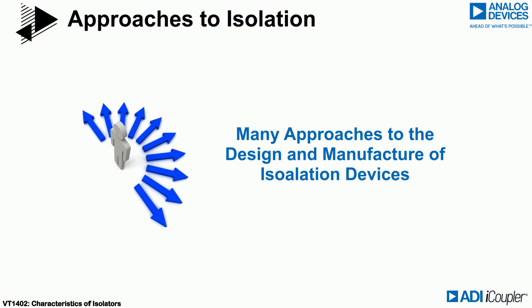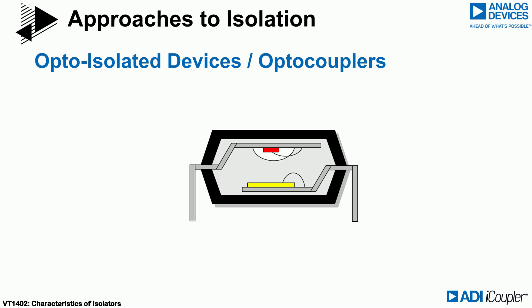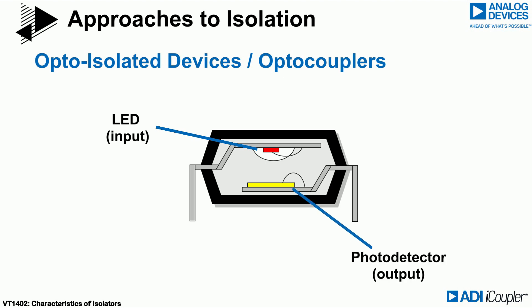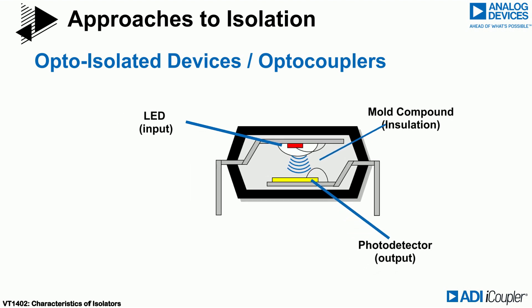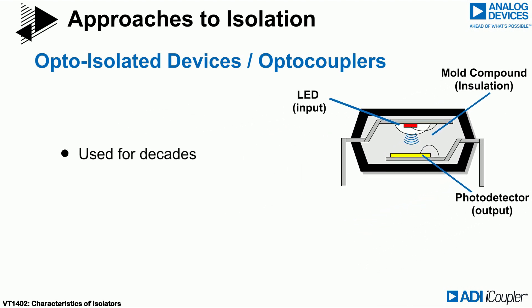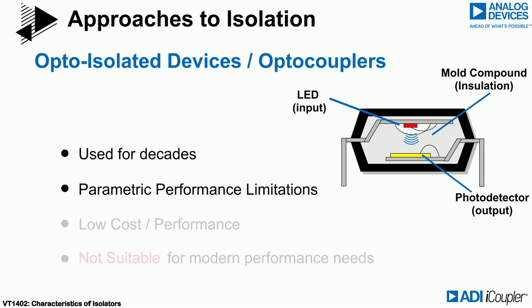There are many ways to design and manufacture isolation devices. Historically, opto-isolated devices, also known as opto-couplers, were used. An opto-coupler contains a LED as the input device and a photo-detector at the output. Data is transmitted by biasing the LED, which produces a current on the other side of the isolation. The opaque mould compound separating the LED and detector provides the insulation. These devices were used for decades, even though there were many parametric drawbacks that hindered system performance.